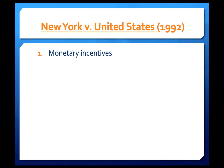The second part relied on access incentives, which authorized states with disposal sites to gradually increase the cost of access and eventually deny access altogether to waste generated in states not meeting particular federal deadlines. This was held to be within Congress's Commerce Clause powers, so this was also not a problem.